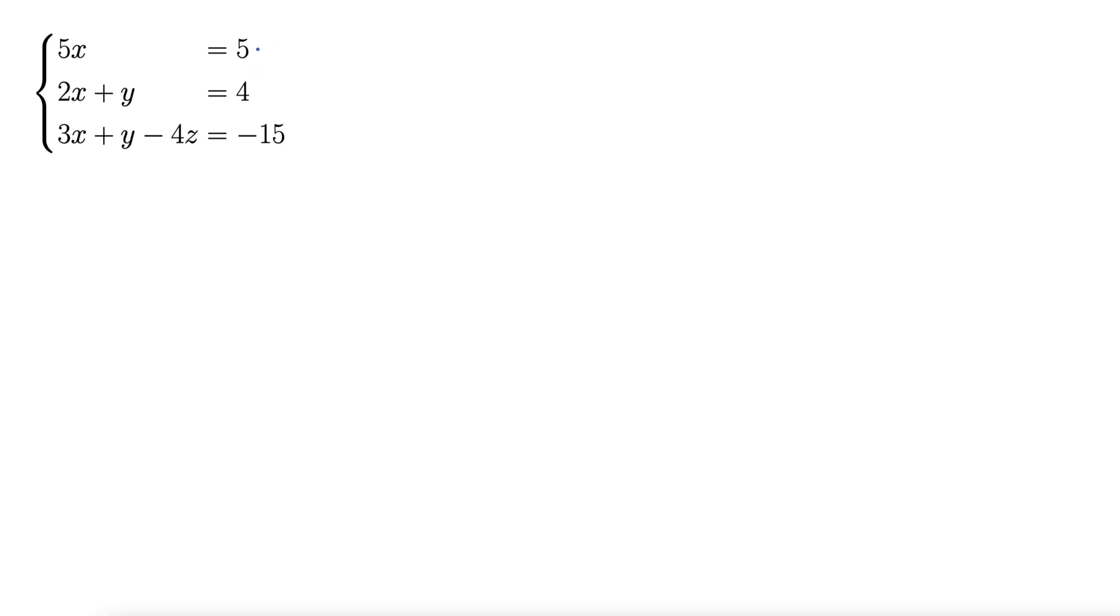Let's see. Right here, 5x equals 5. If I divide both of these by 5, I get x equals 1, and we're already down one variable.